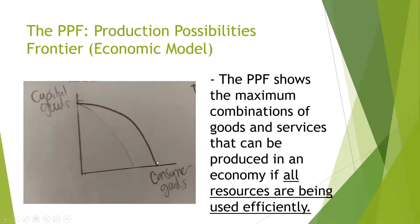For example, in this economy, you have X number of capital goods and X number of consumer goods. However, if the economy is suffering from a recession, the PPF could shrink to the faded pencil line, meaning they're producing less consumer goods and less capital goods.